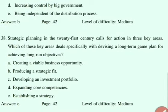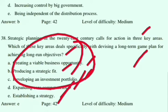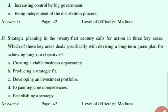Strategic planning in the 21st century calls for action in 3 key areas. You need to create business opportunities, develop a strategic investment portfolio, and expand core competencies. Specifically, you are dealing with everything from making a plan to achieving objectives. All these points come only when you first establish a strategy — so obviously the answer is 'establishing a strategy'.